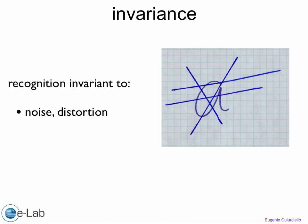You also want invariance to noise or distortion — another very important property where neural networks excel. You want to be able to detect a symbol even if it's distorted by noise or other things. Neural networks can do this fairly well, recognizing the same features as long as there is enough signal-to-noise ratio to detect those features. Neural networks are quite insensitive to noise.